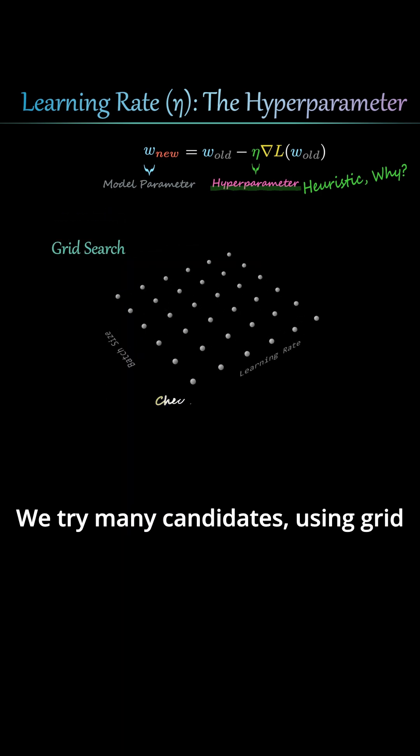So how do we find a good value? We try many candidates using grid search or random search and see what works best.